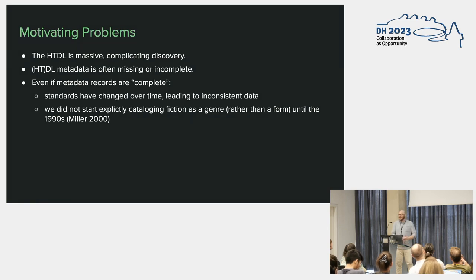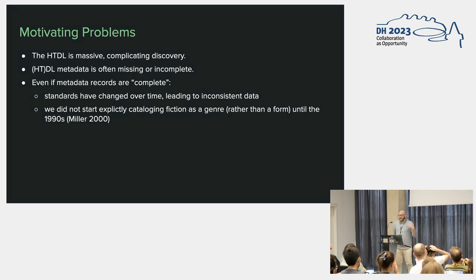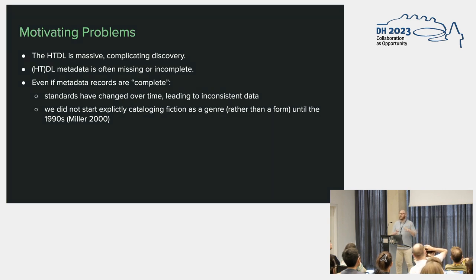Digital library metadata in general, but especially HathiTrust Digital Library metadata, is often missing or incomplete. Even if metadata records are complete, standards have changed over time, meaning records are inconsistent. You have to take multiple different types of approaches if you're looking at just metadata to find items. The Library of Congress did not make a distinction between fiction as genre and form until the 90s, so we're only looking at about 30 years of correctly capturing the genre of an item.